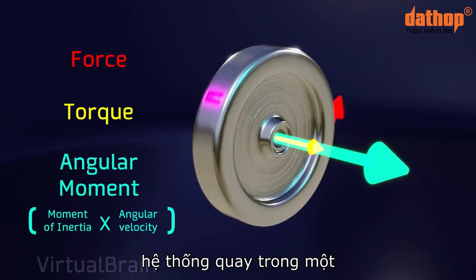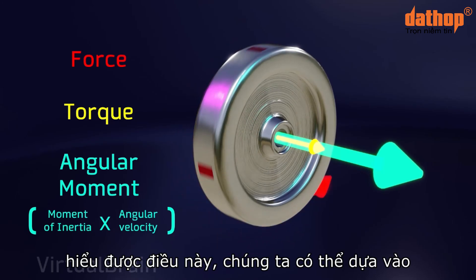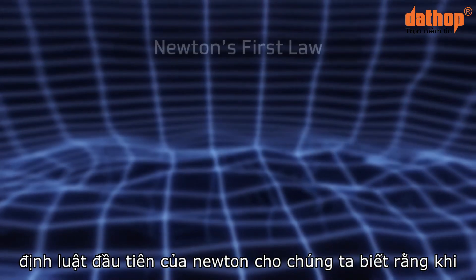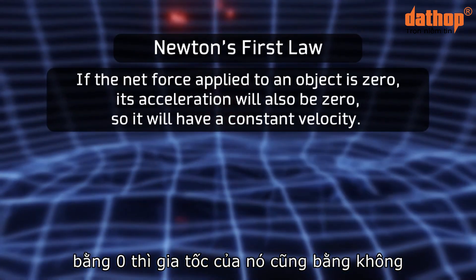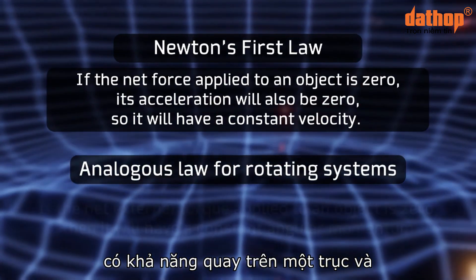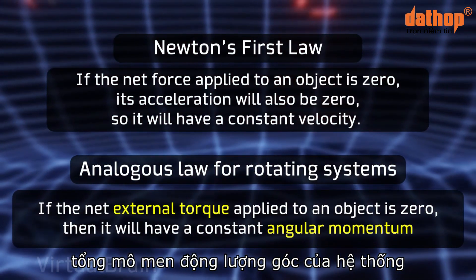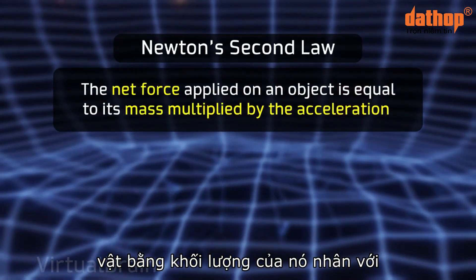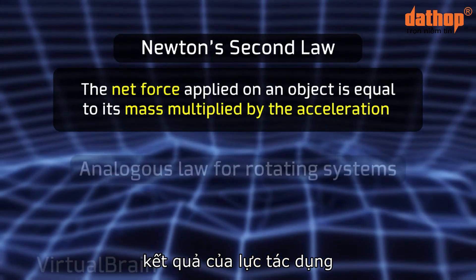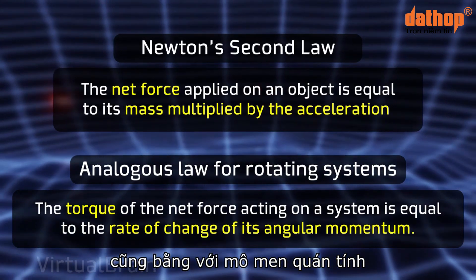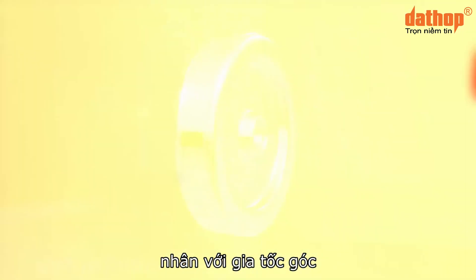The second factor is the angular velocity, which tells us how many degrees the system rotates during a defined period of time. Similar to how Newton's first law tells us that when the net force on an object is zero its velocity remains constant, if a rotating system has zero net external torque, its total angular momentum will also remain constant. And like Newton's second law — force equals mass times acceleration — for rotating systems, the torque equals the rate of change of angular momentum, which is also equal to the moment of inertia multiplied by the angular acceleration.